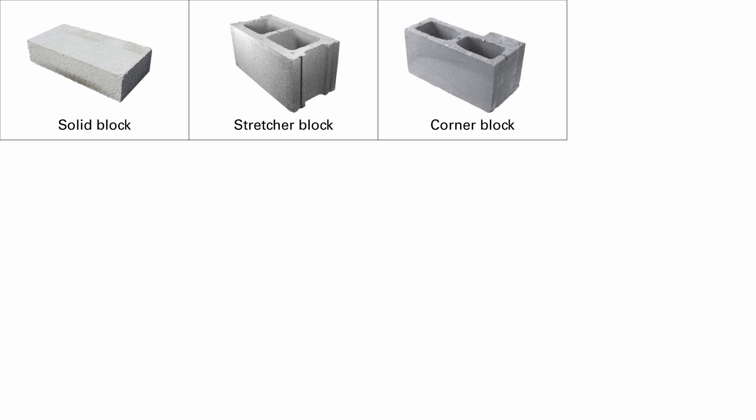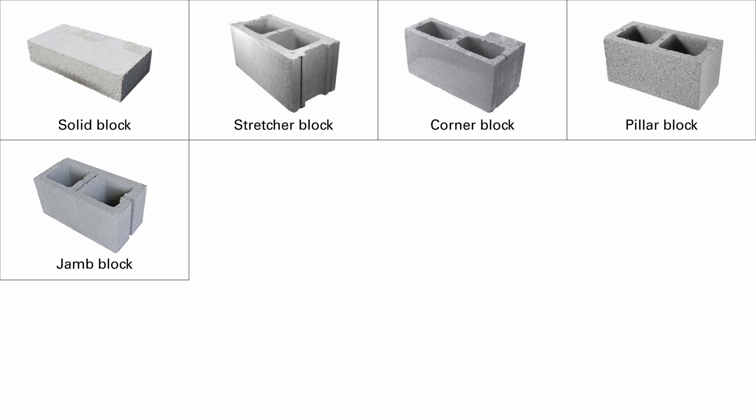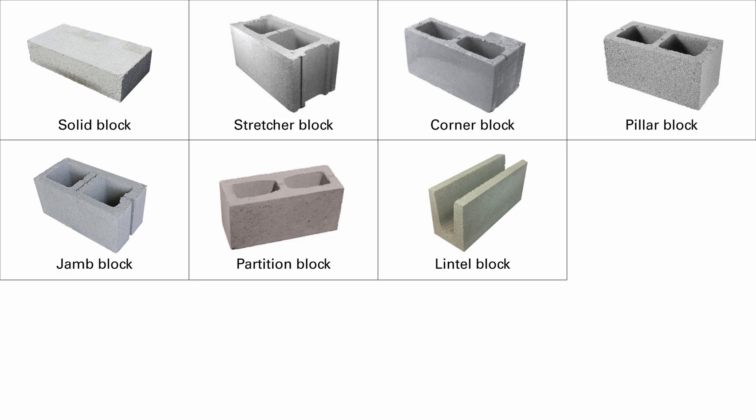Corner blocks are used for window or door openings in a manner that one of their sides is visible. Pillar blocks are also called double corner blocks and are used when both ends are visible. Jam blocks are used when there's an elaborate window opening in the wall. Partition blocks are used to build partition walls, as the name suggests. Lintel blocks have a deep groove used to lay a beam and rebar reinforcement, and it's filled with concrete.